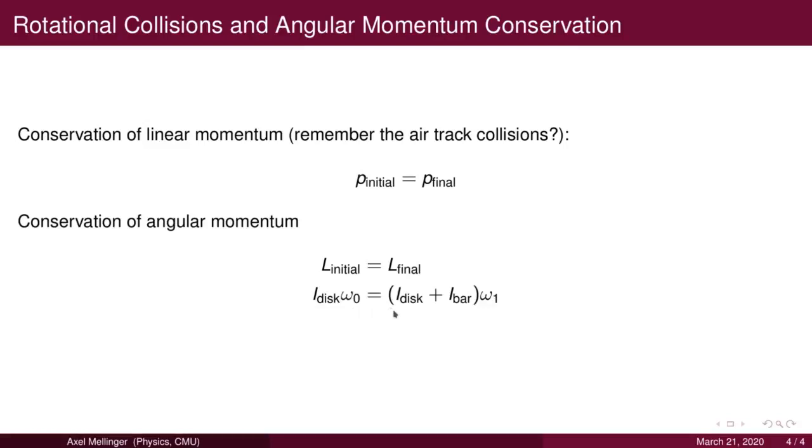After the bar has been dropped, bar and disk now rotate as one. So they have a common combined moment of inertia, i disk plus i bar, and they rotate at a new slower angular velocity omega 1.